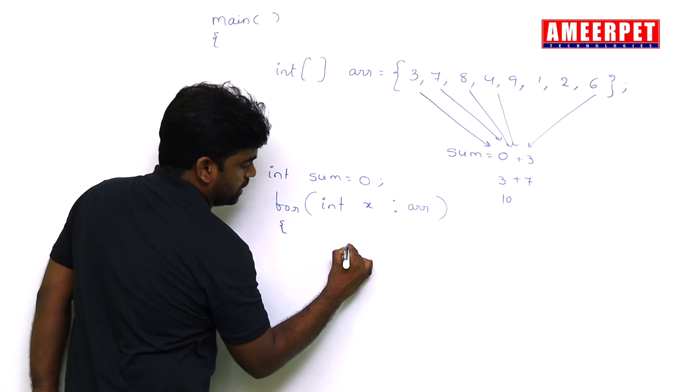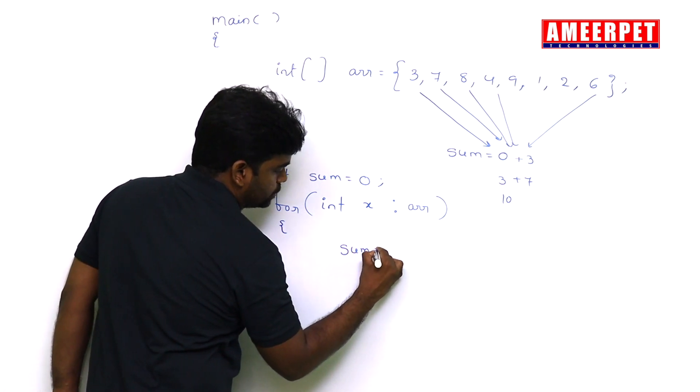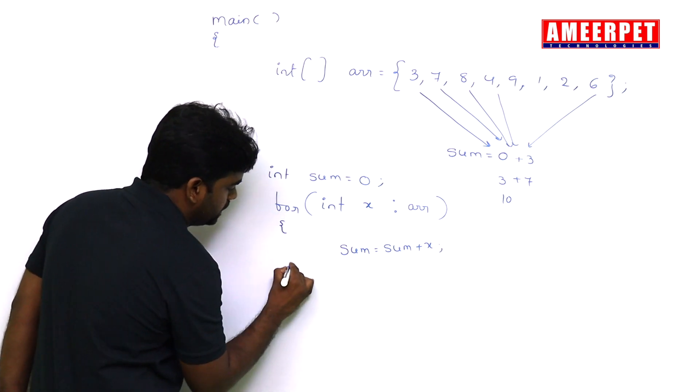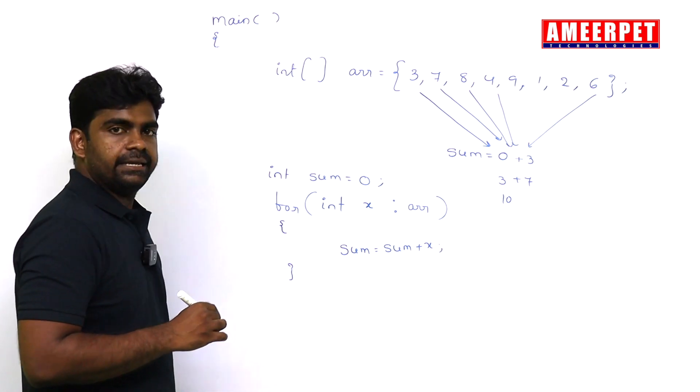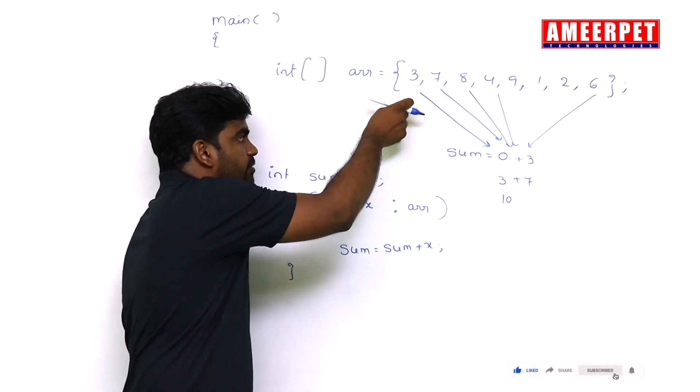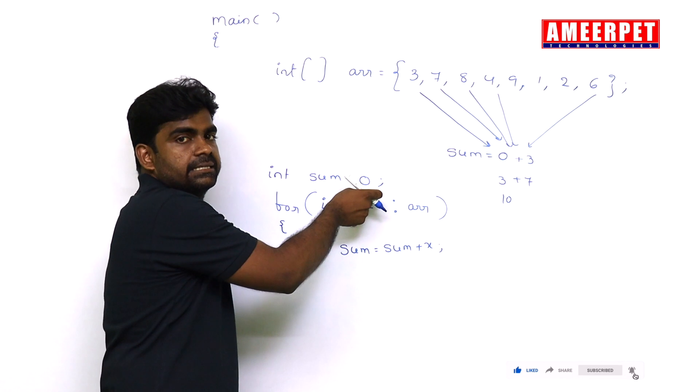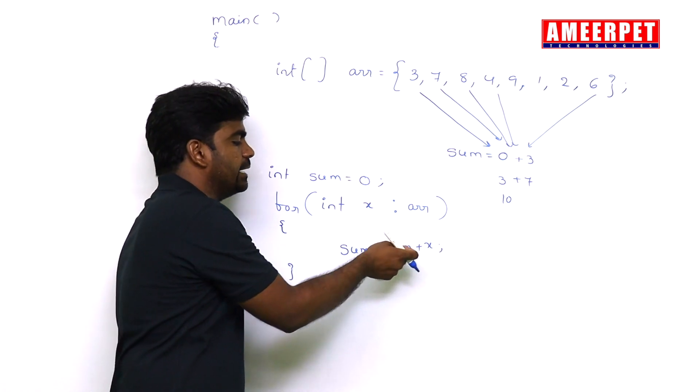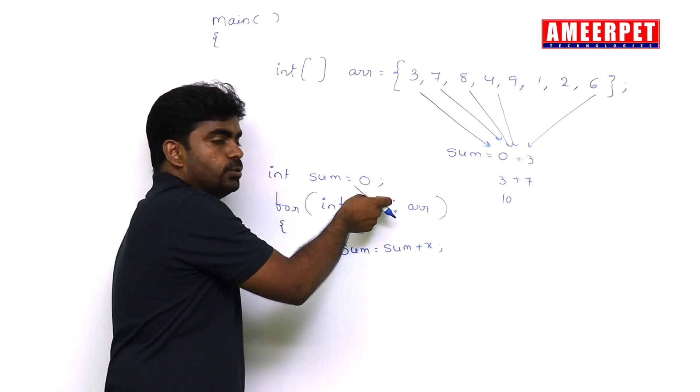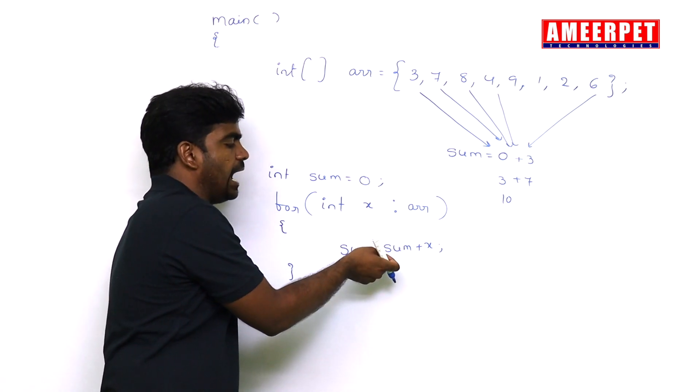How we are adding to the sum? Sum equals sum plus x. So each element from the array we are getting and we are adding to the sum. So first element x, that is 3, will come and store into x. That x will be added to sum. Next automatically 7 will come and store into x. That x will be added to sum.